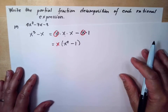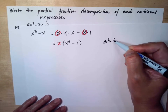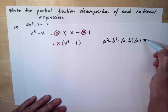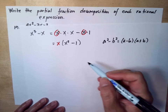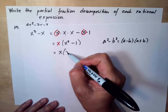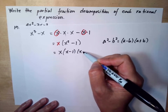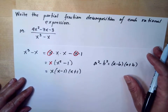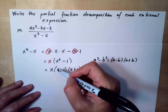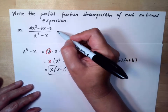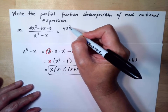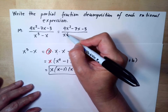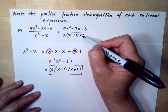If you remember the difference of two squares: a squared minus b squared equals (a minus b)(a plus b). So we can rewrite x squared minus 1 as (x minus 1)(x plus 1). Then we can rewrite our rational expression with this denominator: 4x squared minus 7x minus 3 over x times (x minus 1) times (x plus 1).